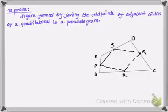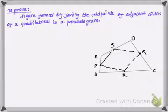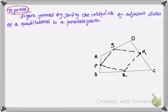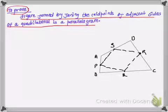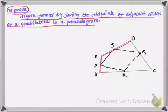Hello and welcome back to my video tutorial on vectors. In this tutorial we'll be looking at another proof question from vectors. Here what we have to prove is that the figure formed by joining the midpoints of adjacent sides of a quadrilateral is a parallelogram. So here we are given a quadrilateral figure with four sides.